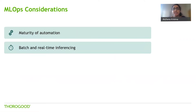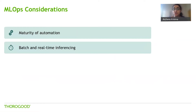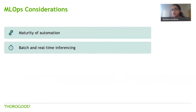Batch and real-time inferencing is a fairly obvious consideration when designing your machine learning model. Do you want your model to serve predictions on a scheduled basis, or on a real-time basis as and when the user needs it? The infrastructure you deploy will vary — for example, APIs or containers for real-time inferencing versus a data store where you may want to store the outputs of a batch inference. Your MLOps pipelines will need to be configured accordingly to meet these infrastructure needs.